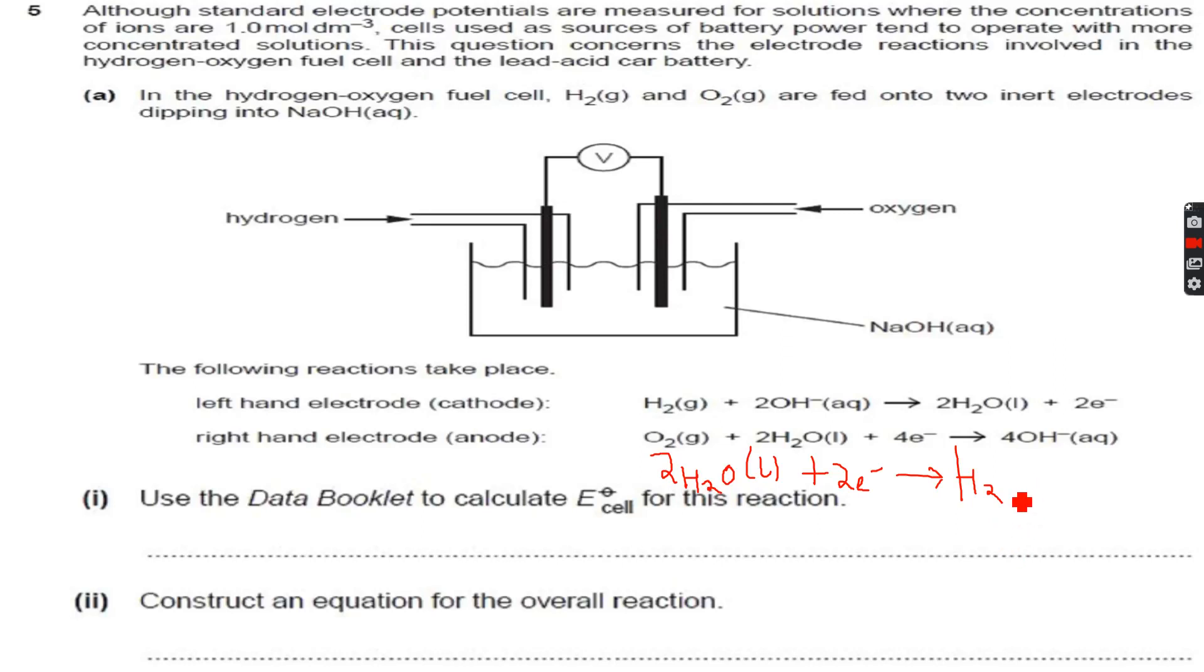Let's write this equation first. Use the data booklet to calculate the E0 cell for this reaction. When I look at these equations in the data booklet, I get for the first one E0 equal to plus 0.40 volt. This one was the alkaline equation, plus 0.04 volt, and for the hydrogen, for this one the second one, I get, let me just browse through the data booklet.